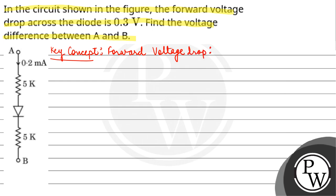Forward voltage drop is the voltage drop across a diode when it is in forward conduction.